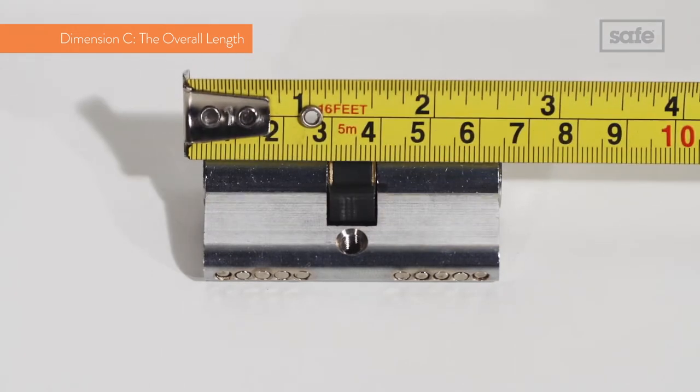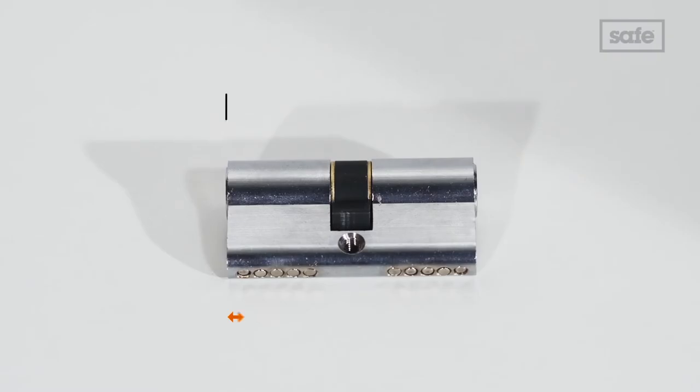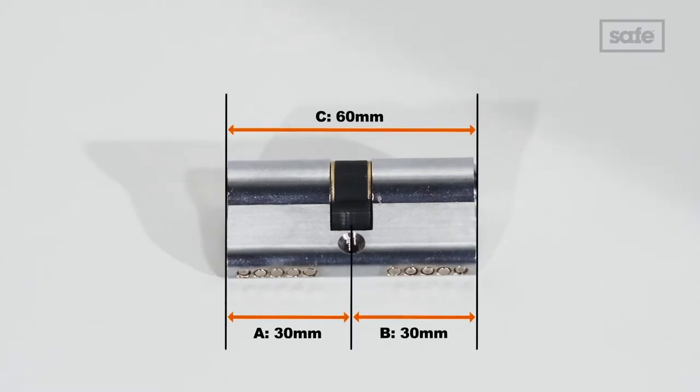Finally measure the cylinder as a whole. This is known as dimension C, the overall length. As you can see our cylinder measurements in millimetres are A30, B30 and C60.